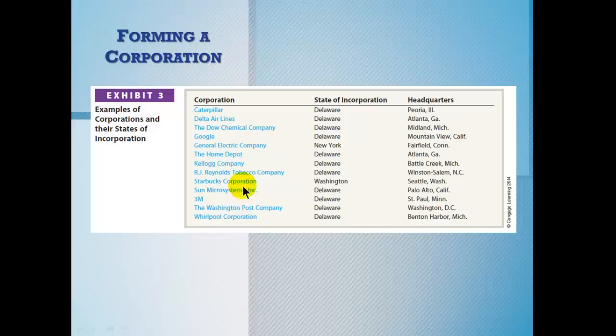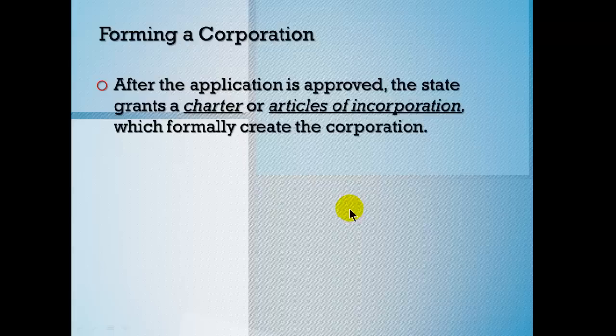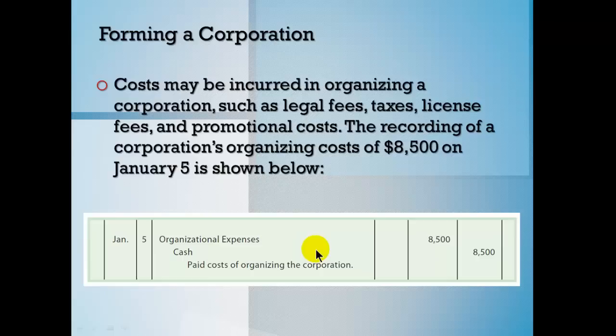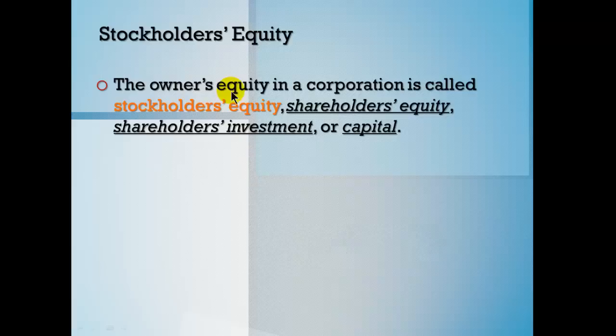The company I work for is incorporated in New York. GE is also incorporated in New York, while Starbucks is in Washington — that makes sense — but most large companies are in Delaware. Corporations also have a charter and articles of incorporation — official legal documents approved by the state in which you incorporate. There are also bylaws and operating rules for conducting affairs. You'll find various committees defined in the bylaws: a compensation committee, compliance committee, and audit committee. Organizational costs are simply expensed.